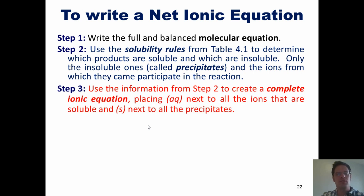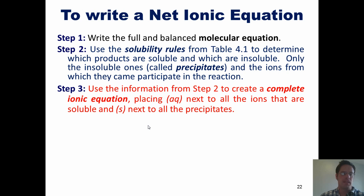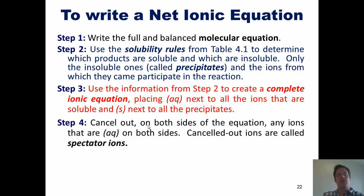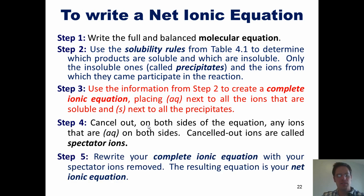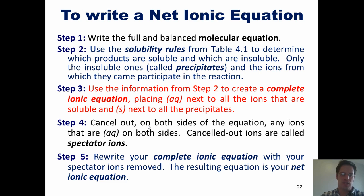Step three: use the information from step two to create a complete ionic equation, placing AQ next to all the ions that are soluble and S next to all of the precipitates. Step four: cancel out any ions that are AQ on both sides of the equation — those are called spectator ions. Step five: rewrite your complete ionic equation with your spectator ions removed. The resulting equation is your net ionic equation.